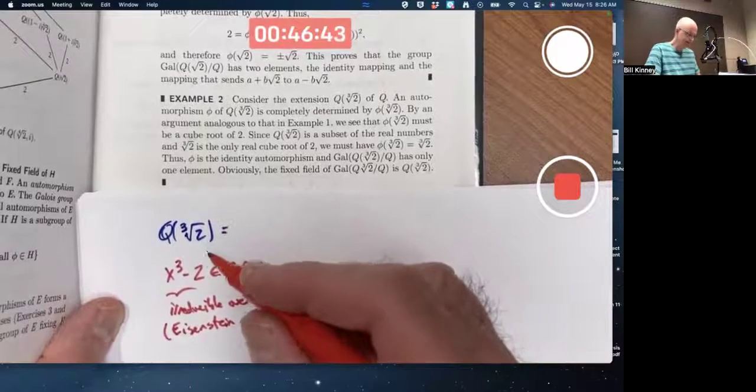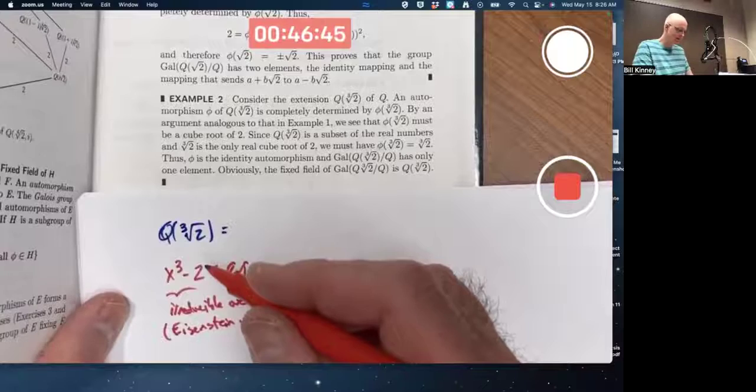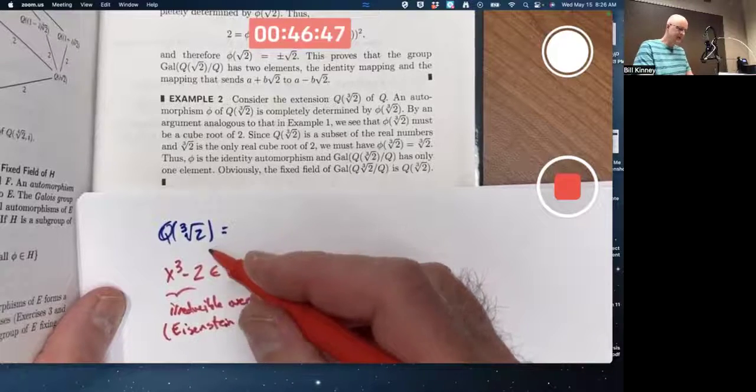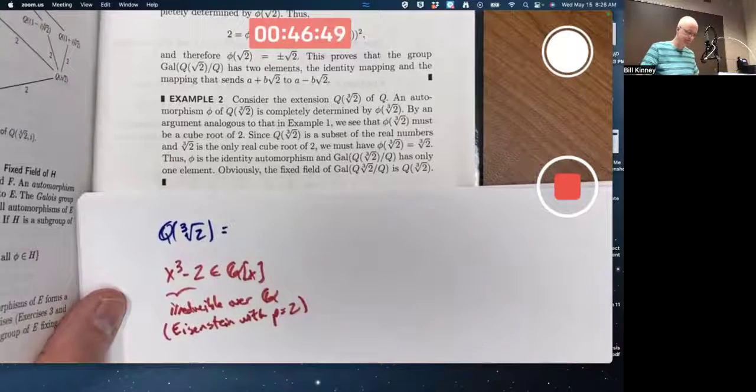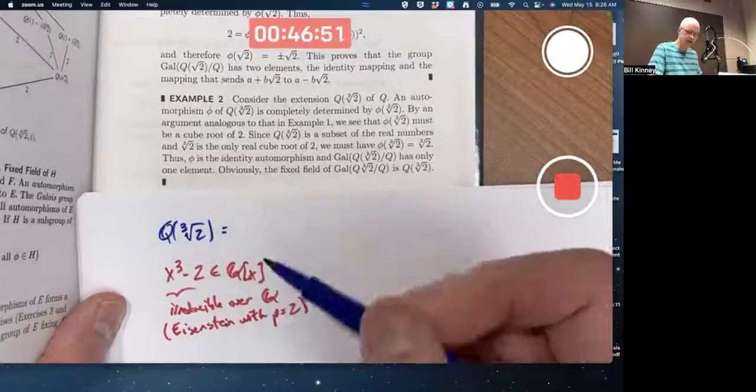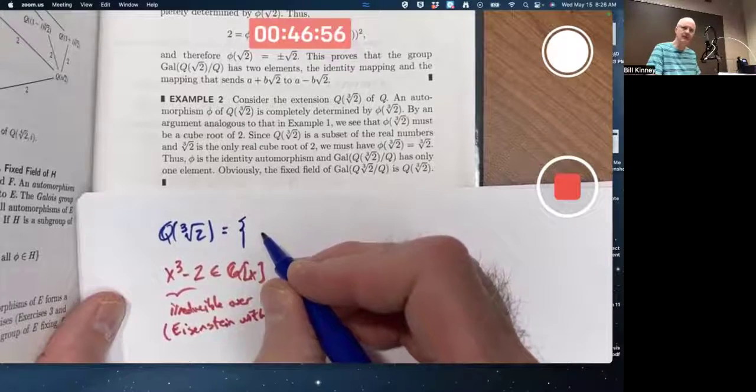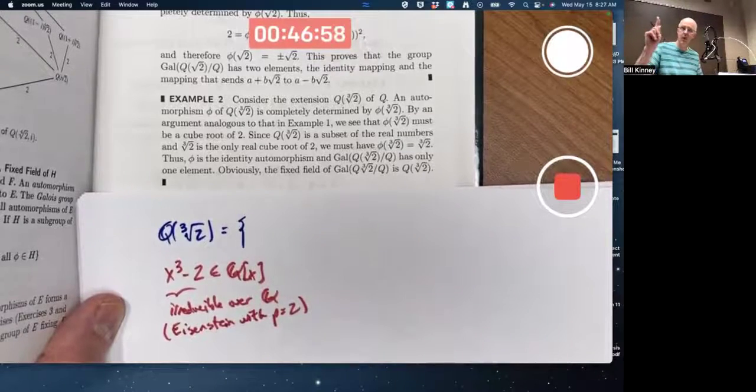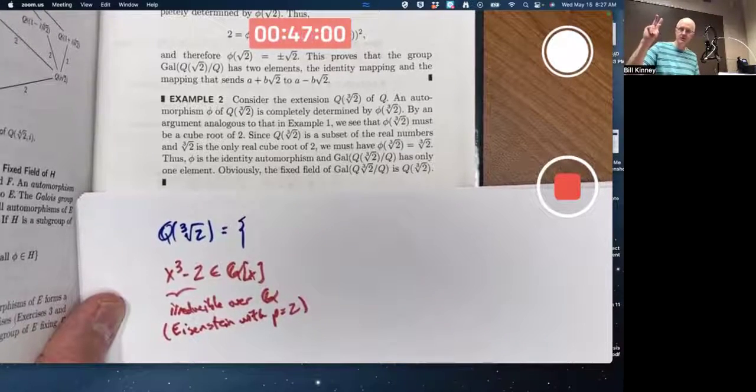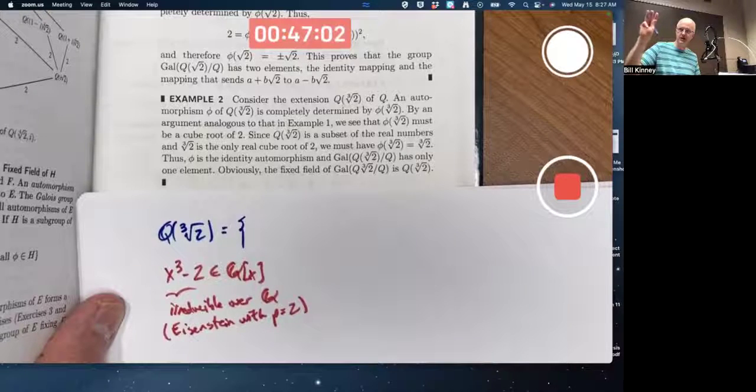And that means that the degree of this extension over Q is 3 and every element of this field extension can be written as a linear combination of the basis elements which would be 1, cube root of 2, and cube root of 2 squared.